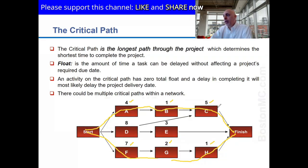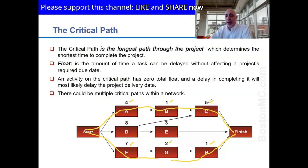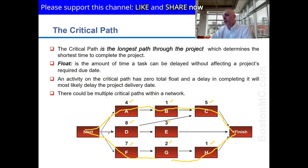Who finishes first — those working on A-B-C or those working on F-G-H? Neither. They finish at the same time, because both paths require ten days. The activities in the middle, D and E, are eight plus three — they need eleven days. So those working on D and E will finish one day after the others.